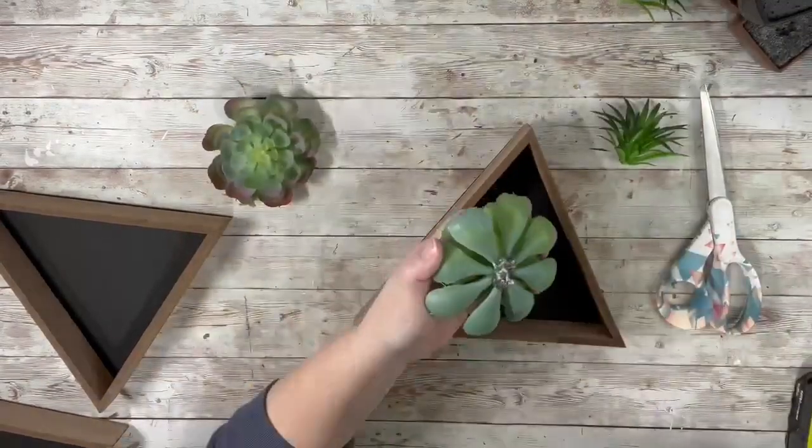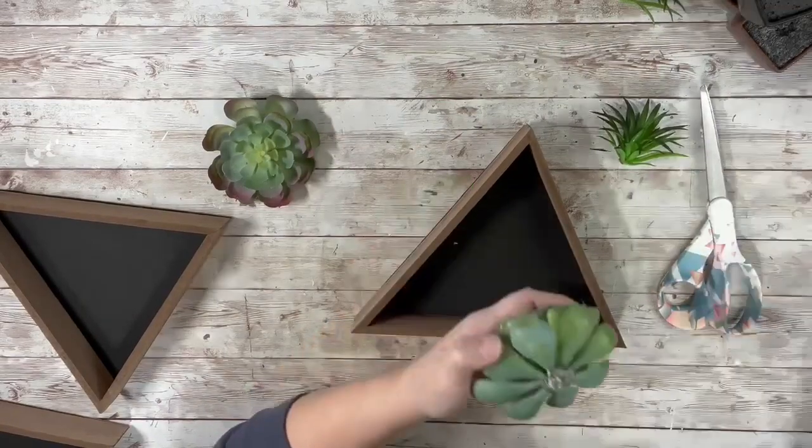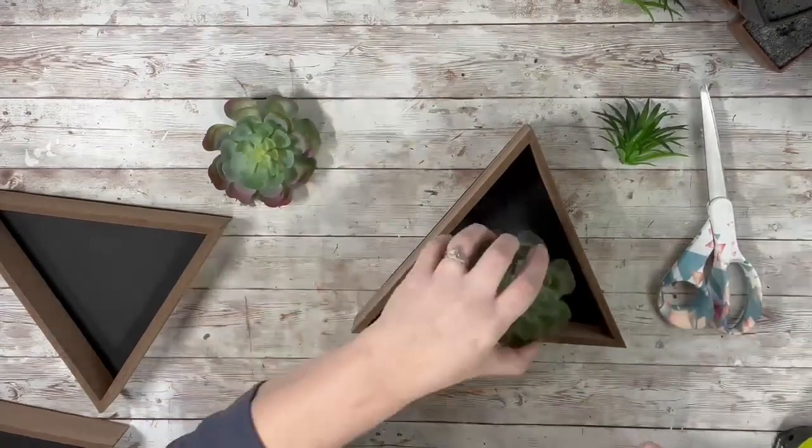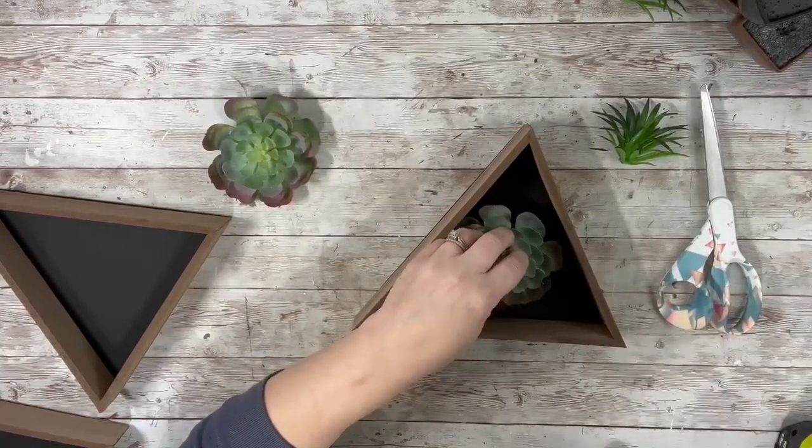Next I took the hot glue and put a decent amount of it on the back side of the succulents and put the larger ones, one in each of the wooden triangles.